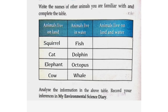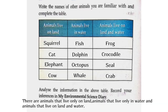Animals that live on land and water: frog, crocodile, seal, crab. Analyze the information in the above table and record your inference. There are animals that live only on land, animals that live only in water, and animals that live on both land and water.